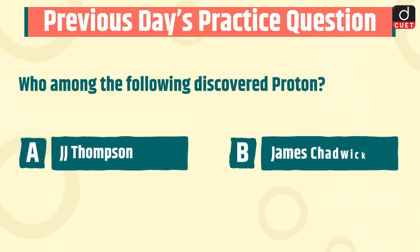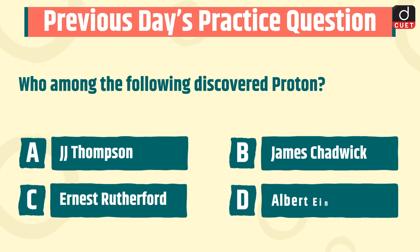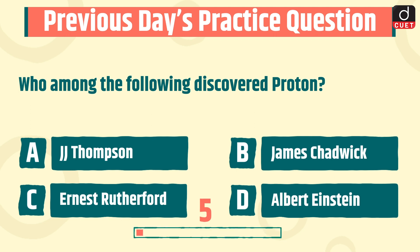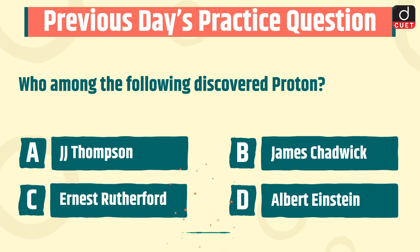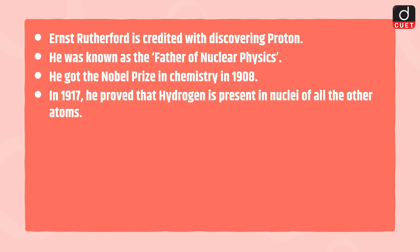The question was: who among the following discovered the proton? J.J. Thompson, James Chadwick, Ernest Rutherford, or Albert Einstein? The correct answer is option C, Ernest Rutherford. He is credited with discovering the proton and was known as the father of nuclear physics. He received the Nobel Prize in Chemistry in 1908, and in 1917 he proved that hydrogen is present in the nuclei of all other atoms.